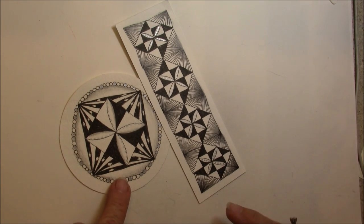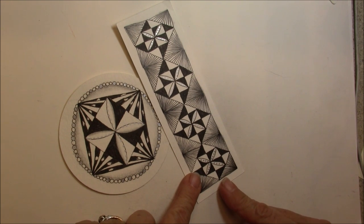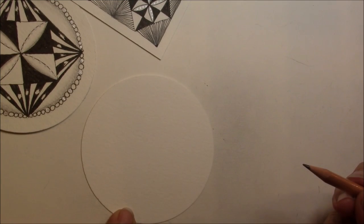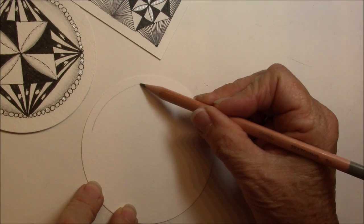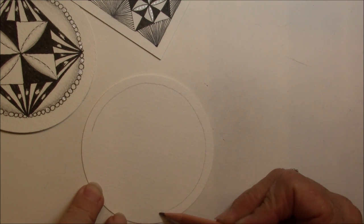I've done it in the round, and I've done it on a bookmark, and I just think you're going to find this one a great tangle. We're going to use a round tile, and first of all I'm going to put a border around the outside edge.